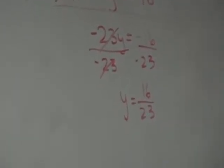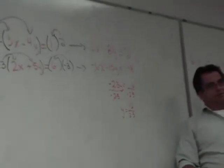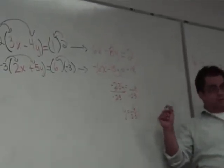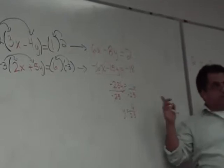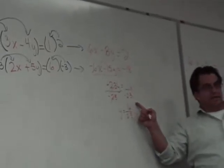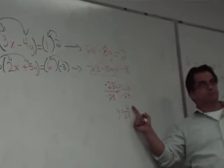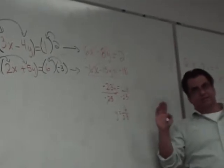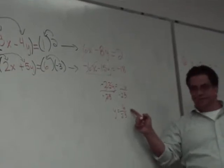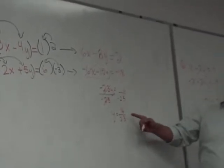Now I hope I won't confuse you, but I'm going to show you an alternative to what we've been doing. What we would have to do right now is take the number 16/23rds, which I would guess is in no one's list of favorite numbers ever.